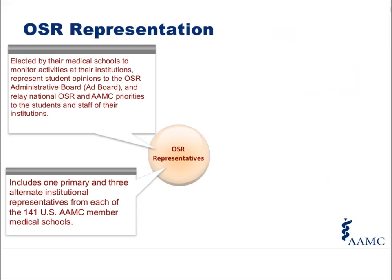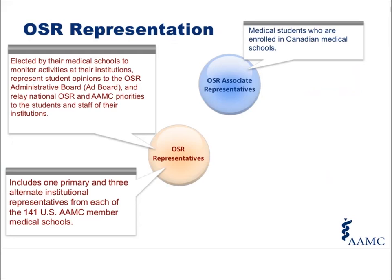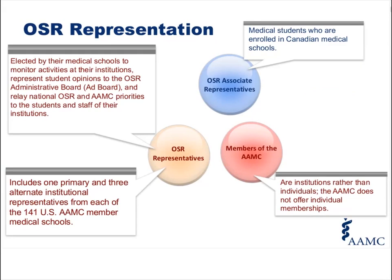You all were either elected or appointed by your medical school to monitor the activities at your institution and to represent opinions to the OSR's ad board. For most of you, this includes one primary and up to three alternative institutional representatives — that's 141 U.S. member medical schools. We also have associate representatives from Canadian medical schools, who are non-voting representatives. The members of the AAMC are actually institutions rather than individuals, so it's your institution that is a member of the AAMC and you serve as a representative for your institution.